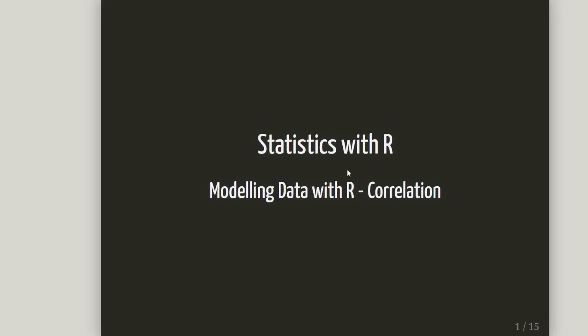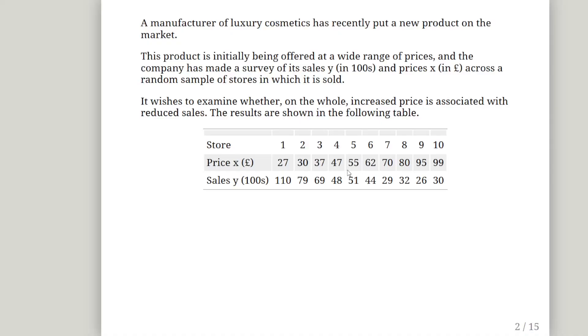In this presentation we are going to look at statistics with R. This is a correlation analysis exercise. A manufacturer of luxury cosmetics has made a new product and put it on the market. This product is being initially offered at a wide range of prices and the company has made a survey of the sales. We are going to call that Y in units of hundreds and prices X in units of pounds across a random sample of stores in which it is sold. It wishes to examine whether or not on the whole increased prices is associated with reduced sales.